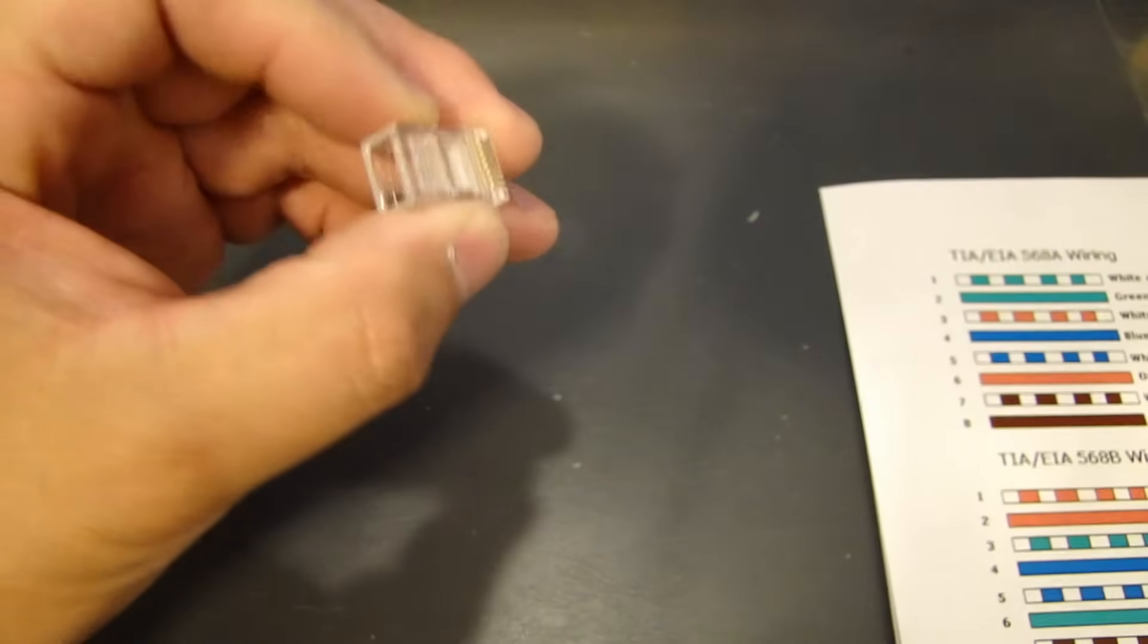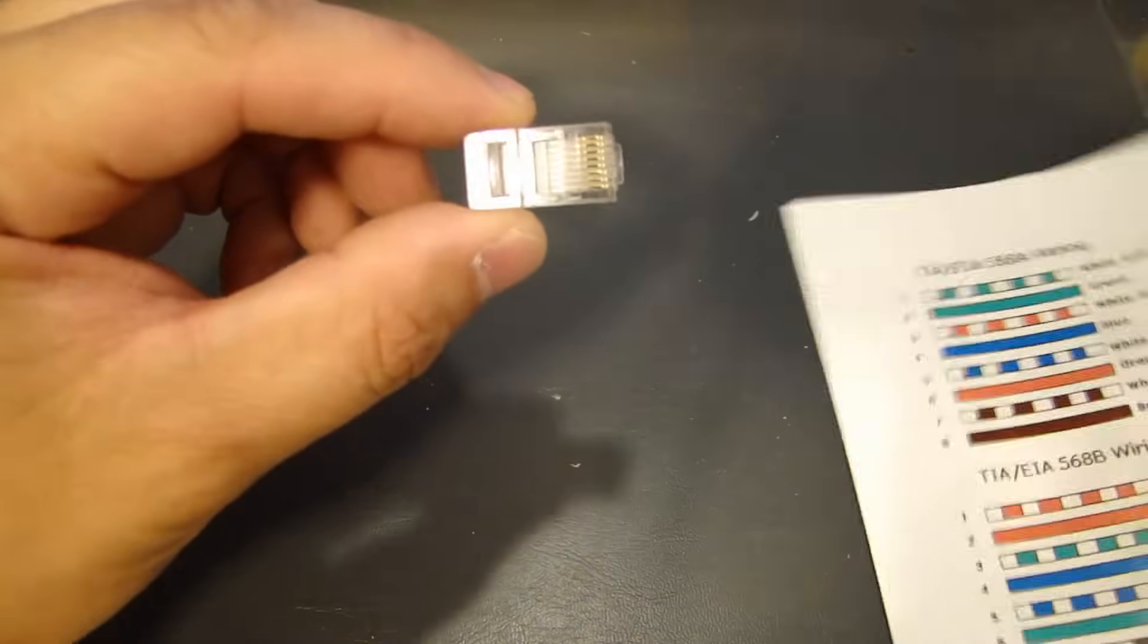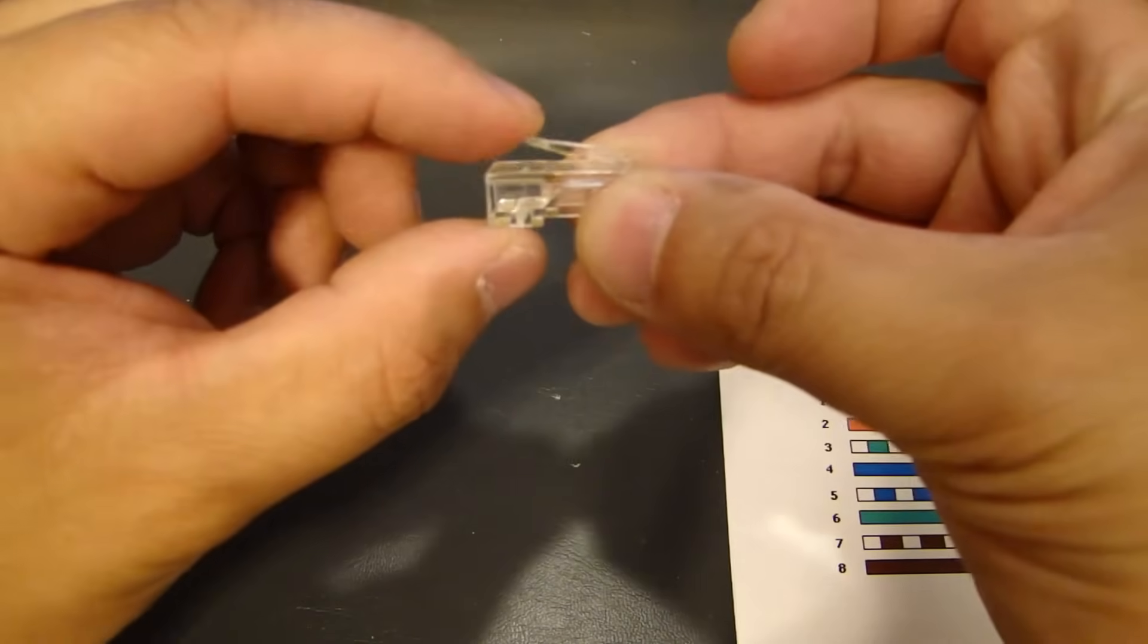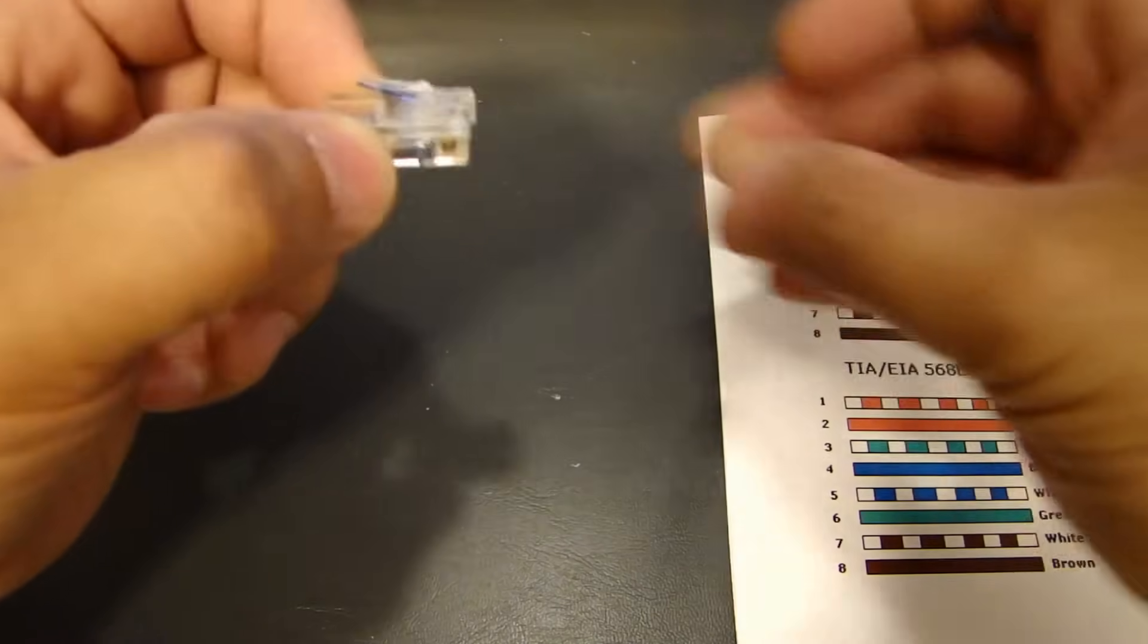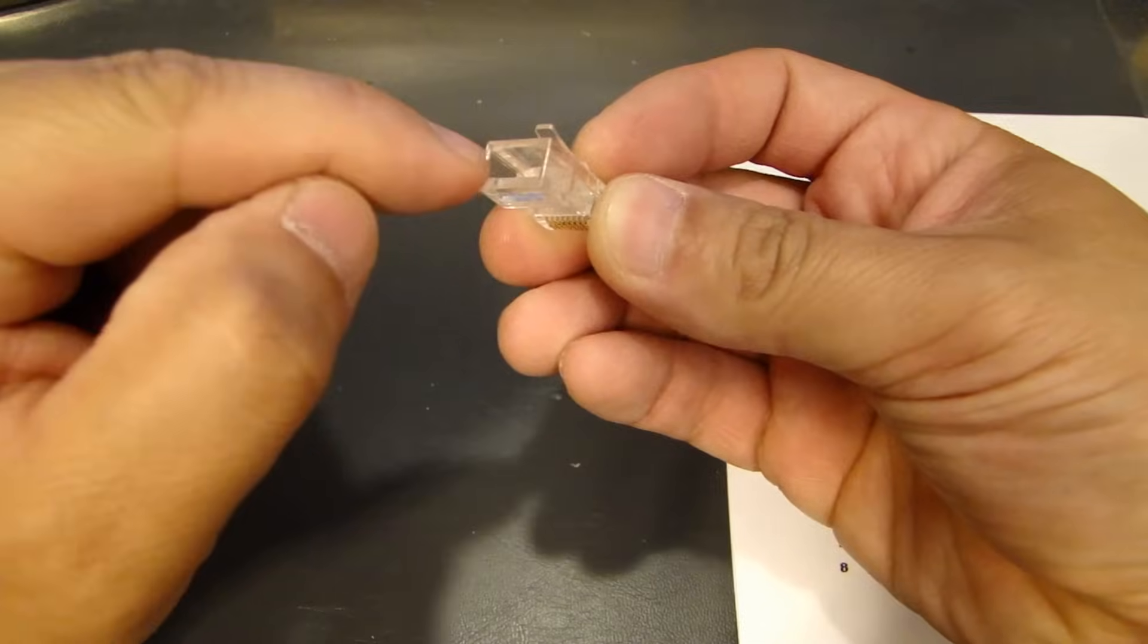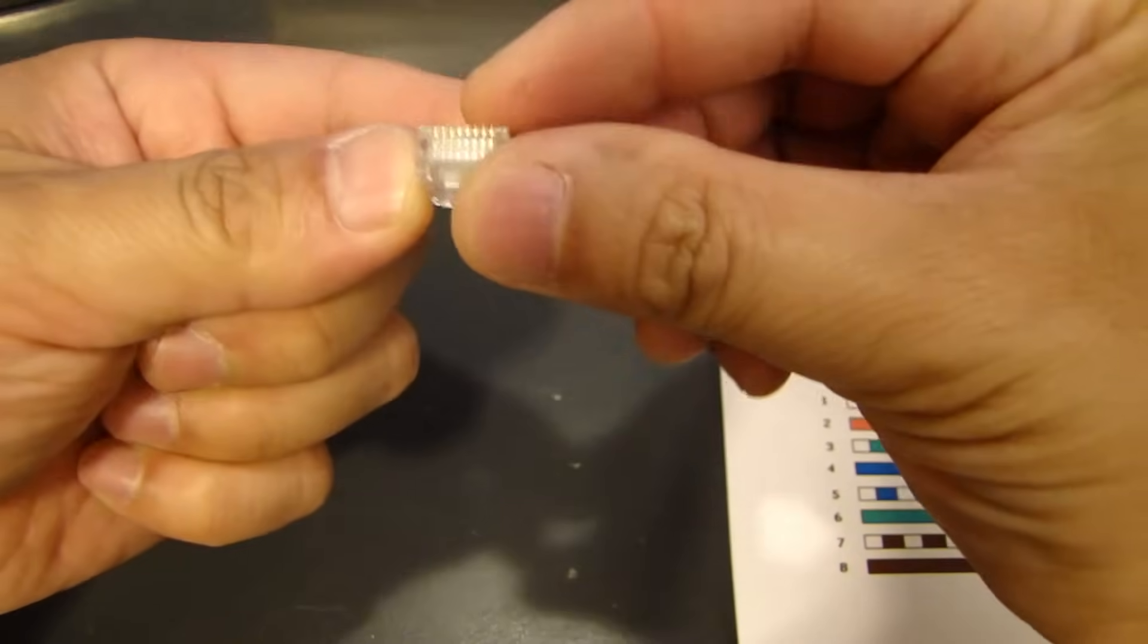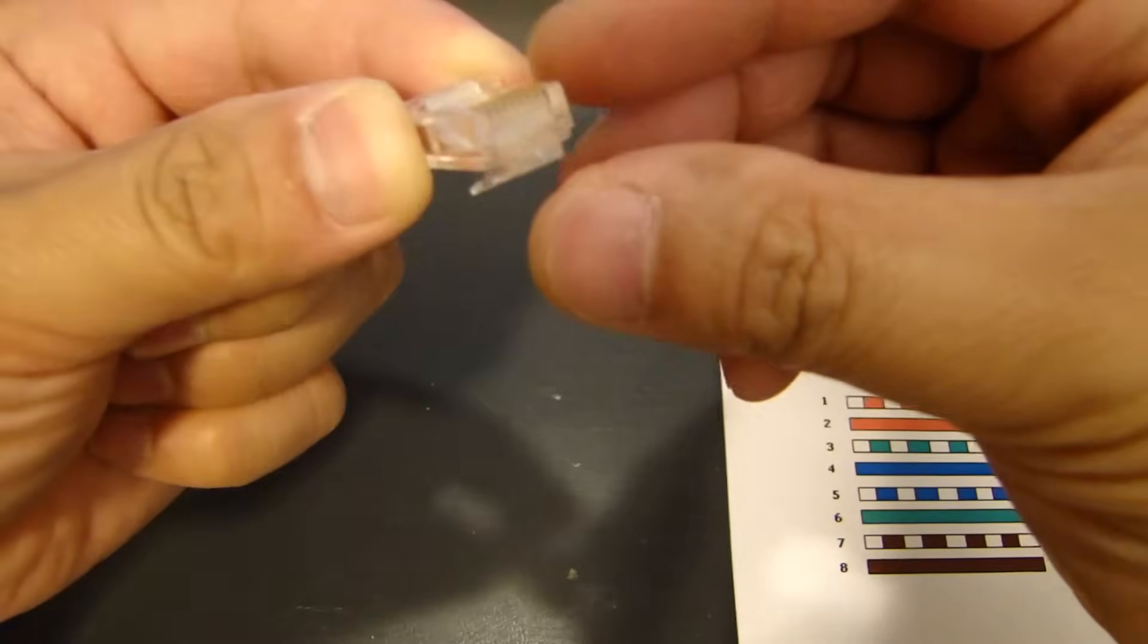Now, let me show you the Cat5 connector that you need. These are what they call RJ45 connectors. And on the top, there's a tab. There's a locking tab. So when you plug it into a device, it will lock it in place. This end here is where you feed the cable. And if you look down on this side here, that's where you see the metal pins.